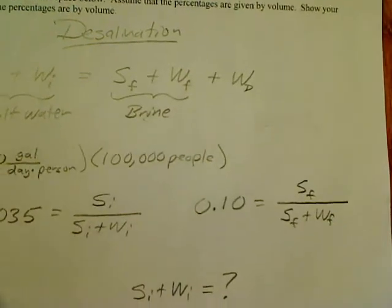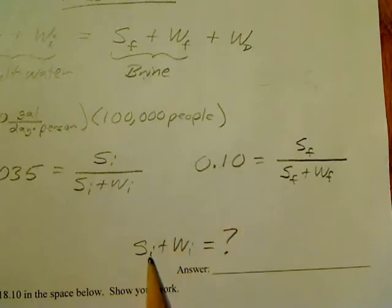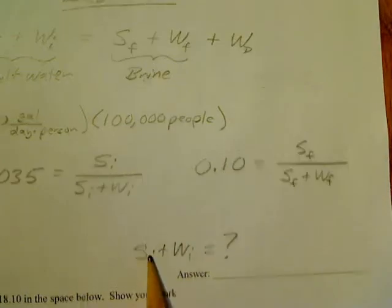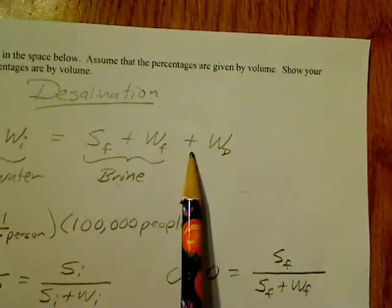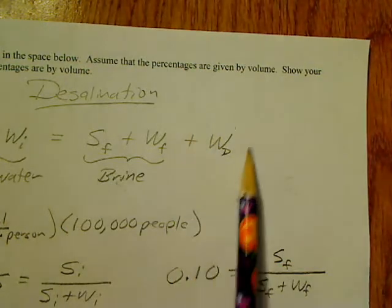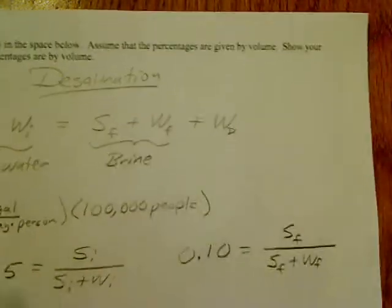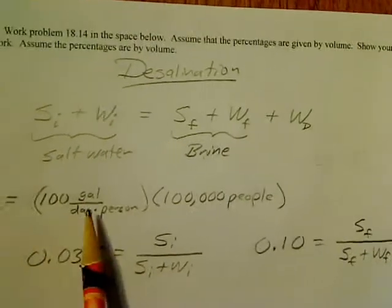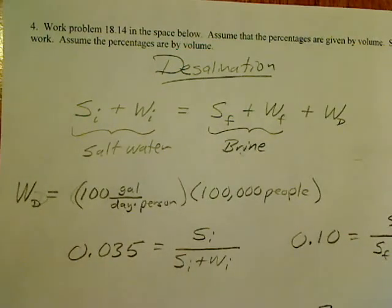You're trying to figure out how much saltwater you would need to supply the city if you're supposed to come up with an amount of drinking water, W sub D. The amount of drinking water can be found by multiplying the 100 gallons per day per person times 100,000 people.